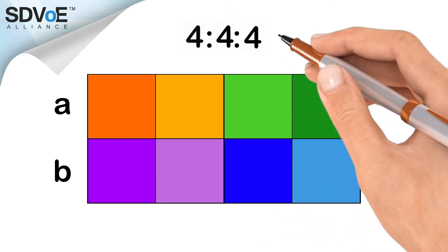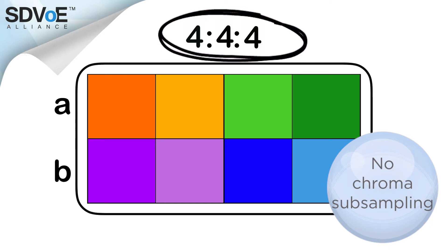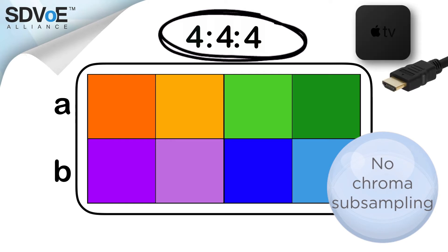This ratio of 4:4:4 therefore means that in fact no chroma subsampling is taking place, and every pixel on the display is able to independently display its own color. This is the native image we would expect to find if we connected the source to the display via an HDMI cable.